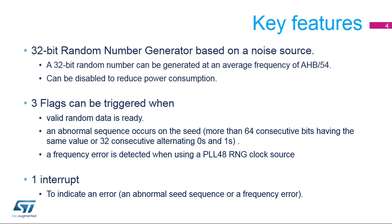The RNG is able to generate a 32-bit random number at an average frequency of AHB per 54. A flag is set in the data register when new random data is ready and validated.